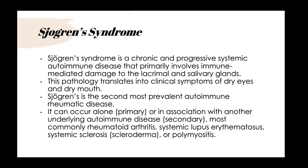Sjogren's syndrome is a chronic, progressive systemic autoimmune disease that primarily involves immune-mediated damage to both the lacrimal and salivary glands. Clinical symptoms include dry eyes and dry mouth. Signs at the slit lamp include corneal erosions, small tear lake volume, reduced tear breakup time, conjunctival hyperemia, meibomian gland dysfunction, and scarring.